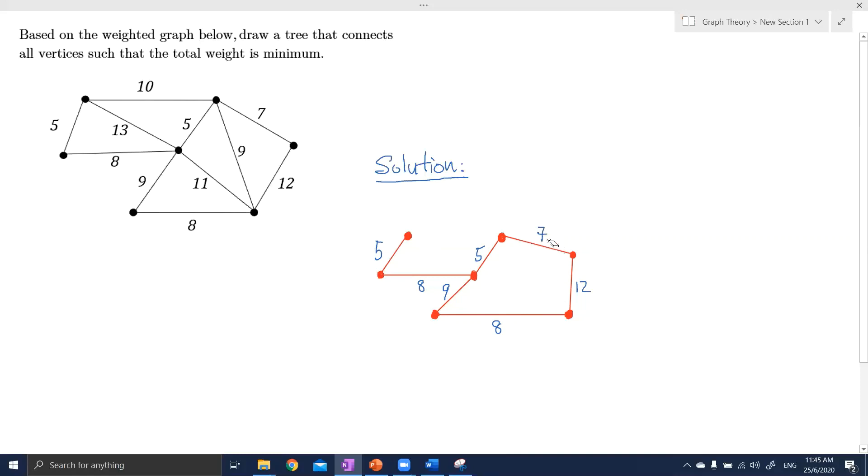And then we left with the last cycle here. So 5, 9, 8, 12, and 7. And we remove the largest weight which is 12. And here we form a tree with minimum weight.